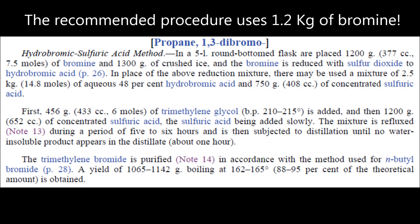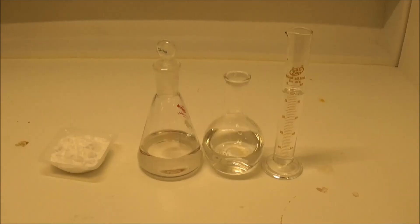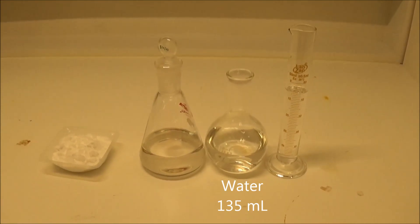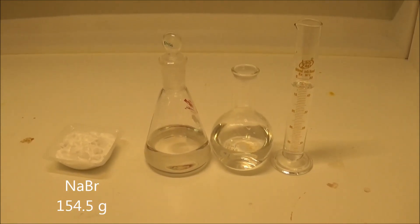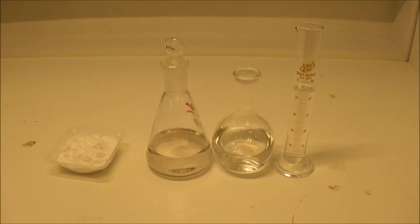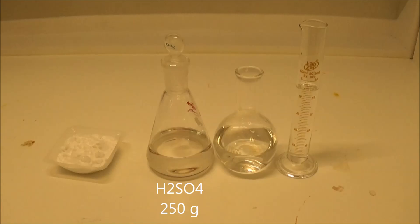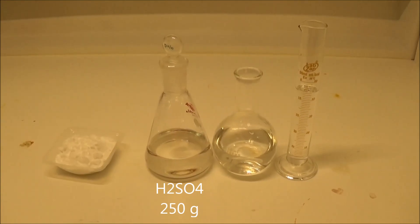I started out with 135 ml of water, 154.5 grams of sodium bromide, 45.6 grams of 1,3-propane diol, and 250 grams of concentrated sulfuric acid.